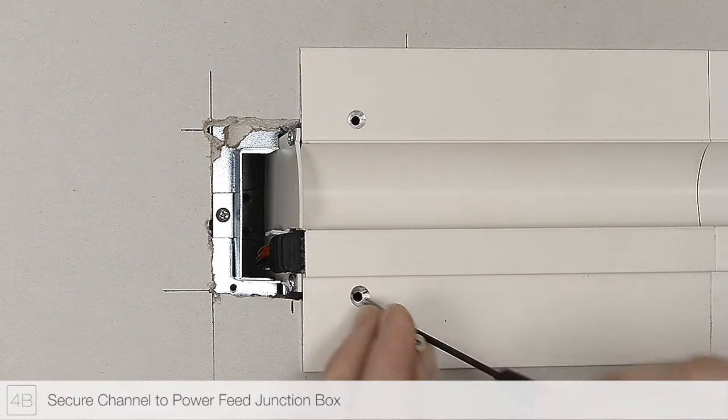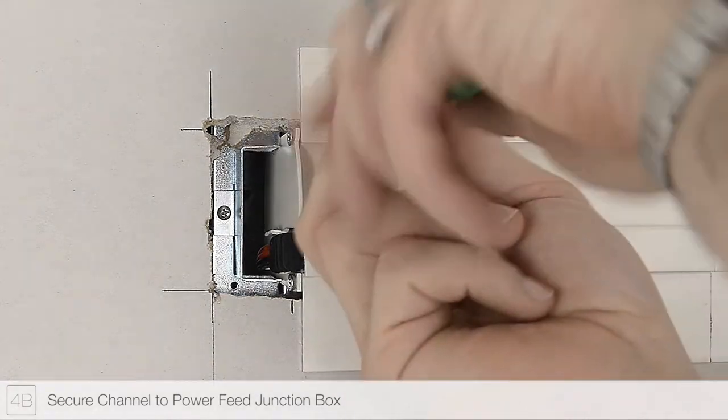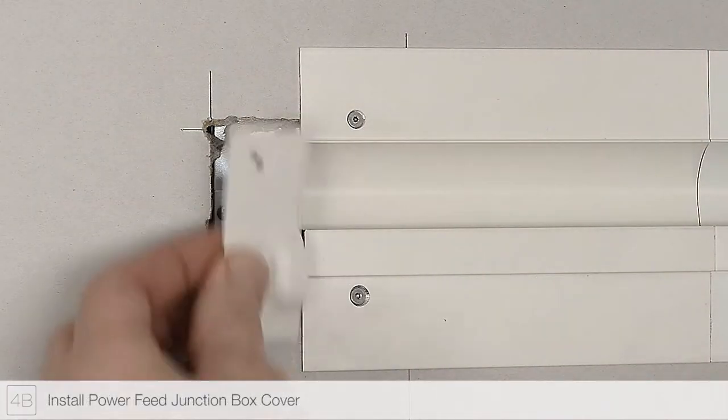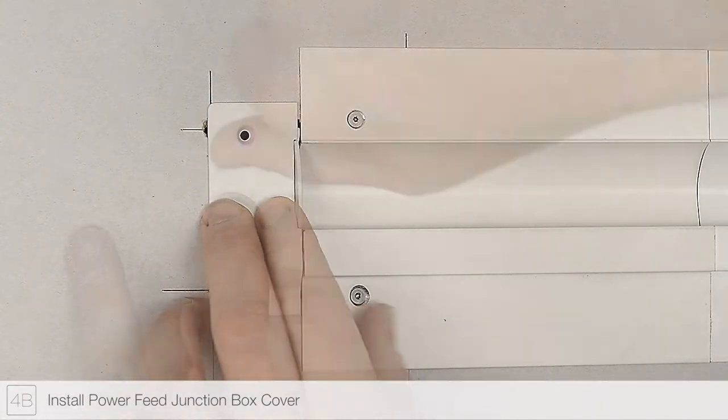Fasten the drywall screws to secure the channel to the junction box. Install the power feed end cap into the junction box slot.